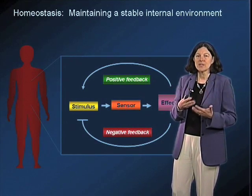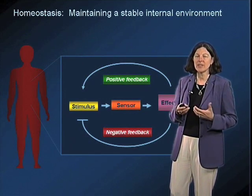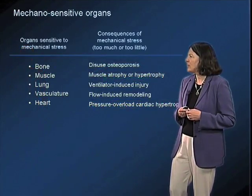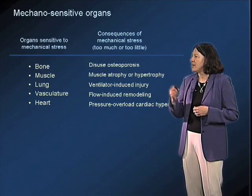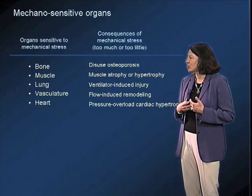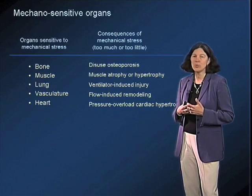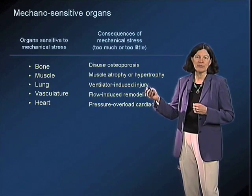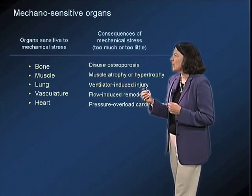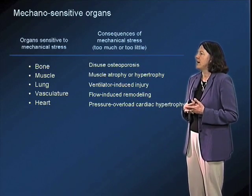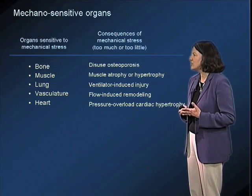How would this work when we're talking about exposure of cells and organisms to significant mechanical stress? We know that there are many mechanosensitive organs in our body: bone, muscle, lung, the vasculature, and the heart. If cells and organs don't respond appropriately to mechanical signals, this can lead to very serious consequences and serious disease. In the case of bone, for example, which is a weight-bearing organ, if there's not sufficient weight on the bones, this can give rise to disuse osteoporosis.